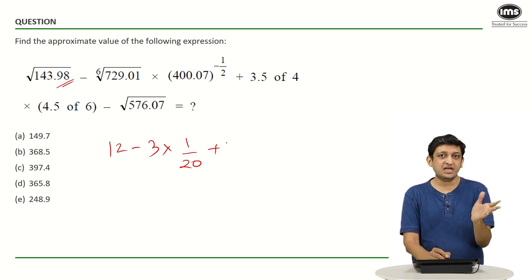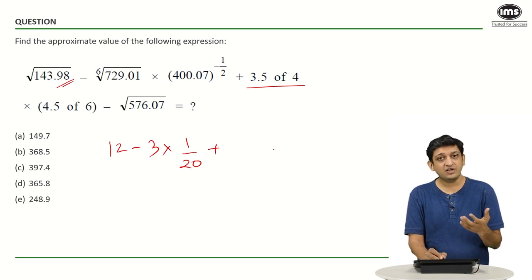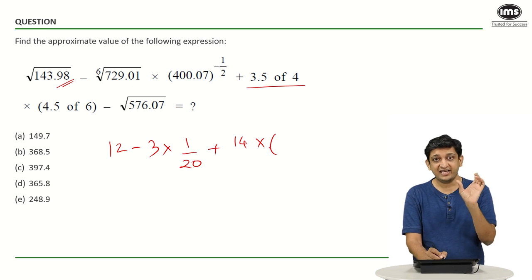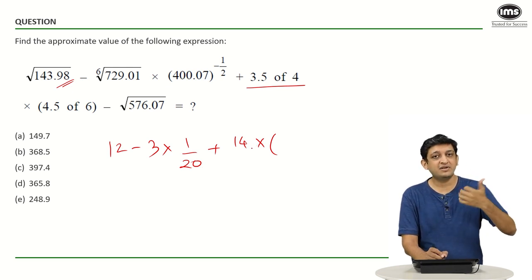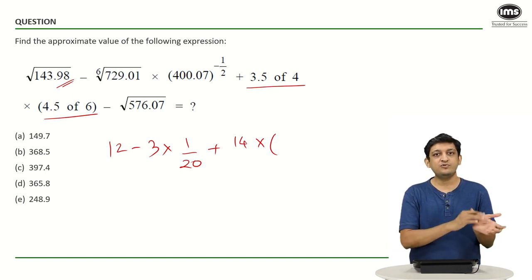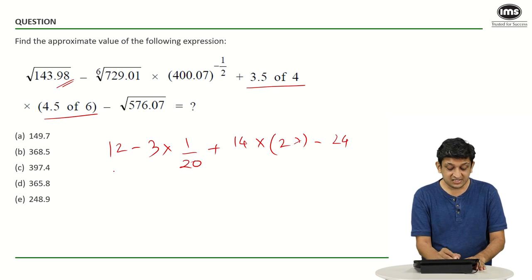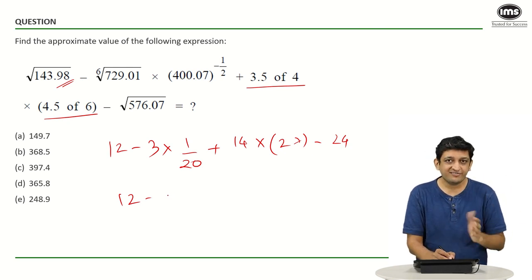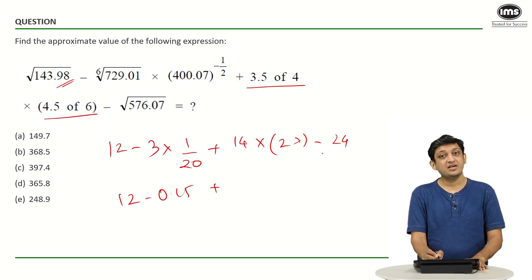Now, 'of' means multiplication — for example, 80 percent of 400 is 80/100 into 400. So 3.5 of 4 is 3.5 into 4: 3.5 twos are 7, twos are 14. So we get 14. Then 4.5 of 6 — following BODMAS (vinculum, brackets, off, division, multiplication, addition, subtraction), 'off' precedes everything. So 4.5 of 6 is 4.5 into 6: 4.5 twos are 9, threes are 27. We get 27. Then minus the square root of 576, which is 24.